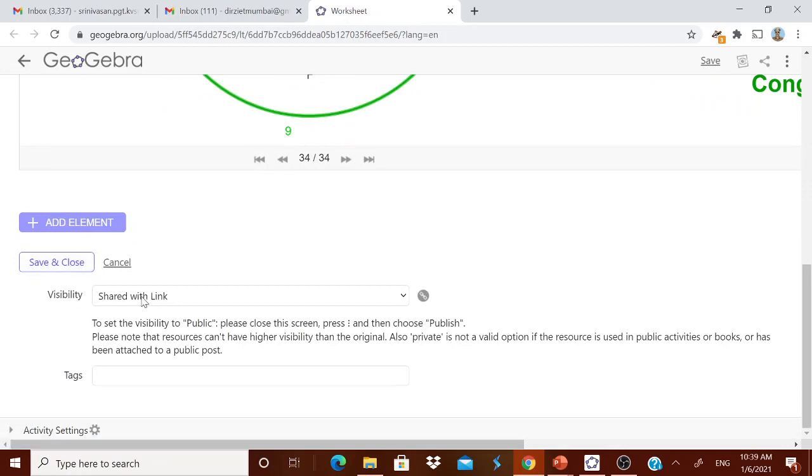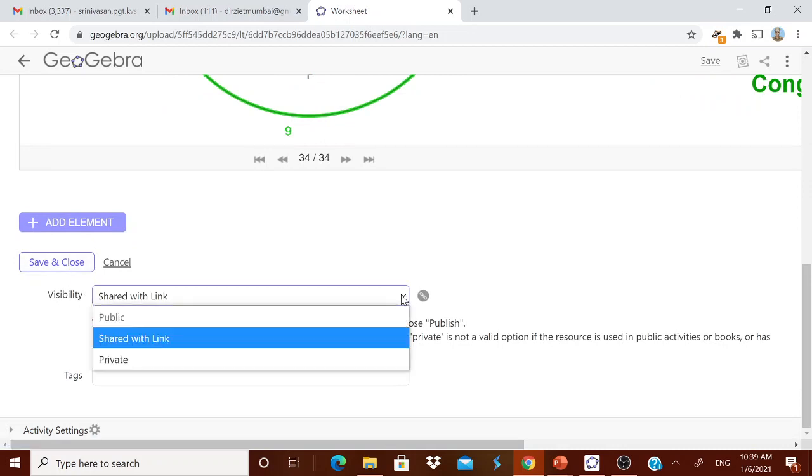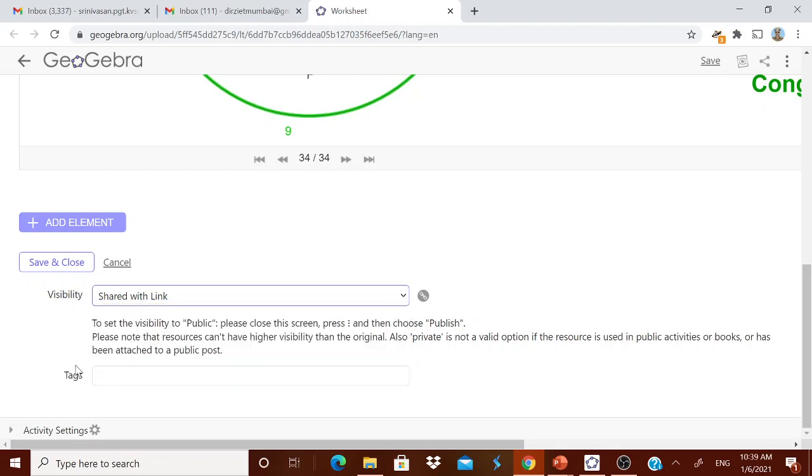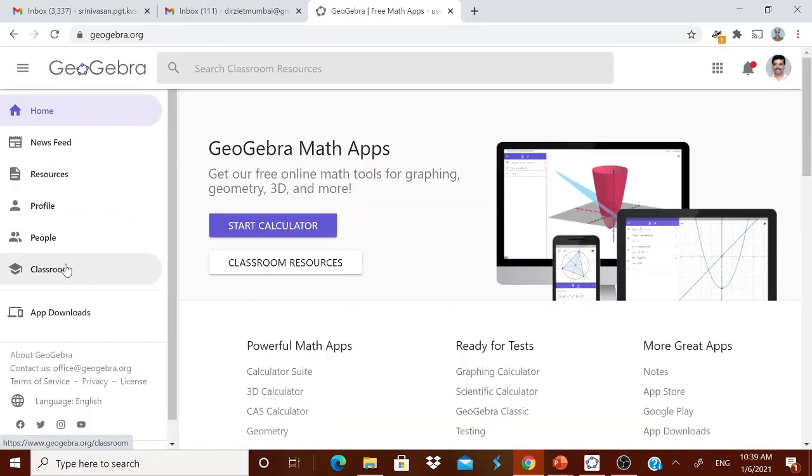You can share it with the link or you can make it as public or you can make it as private. Whatever may be. Now you can have your tag also. I will just save and close. It is saving now. Now it is saved. Now where it has got saved.